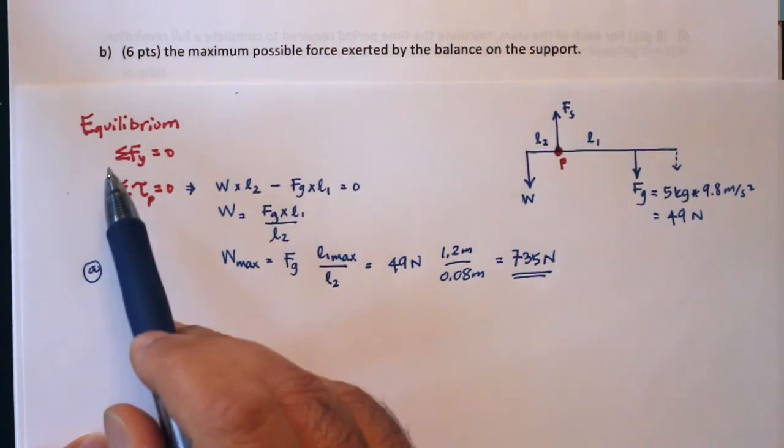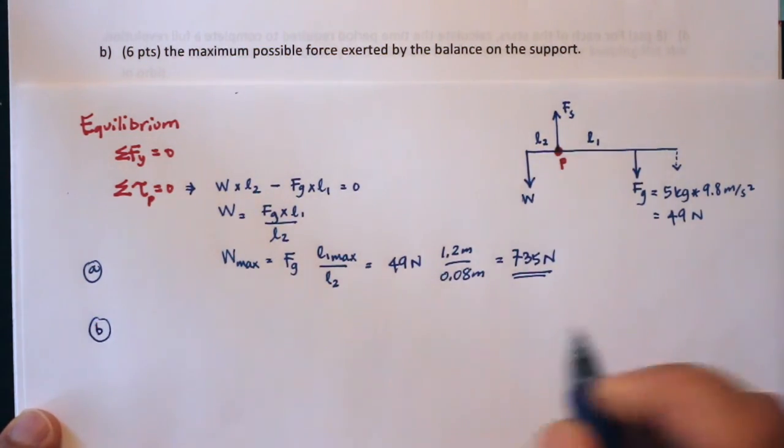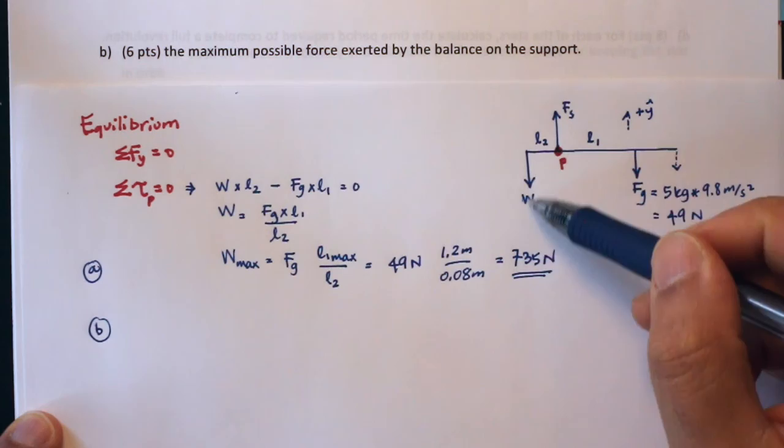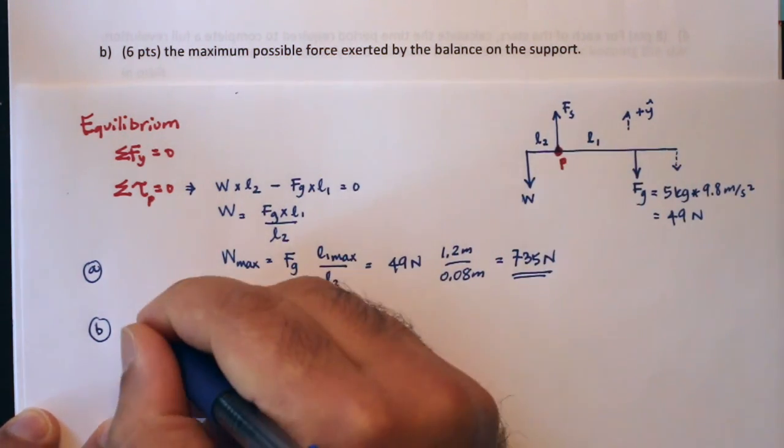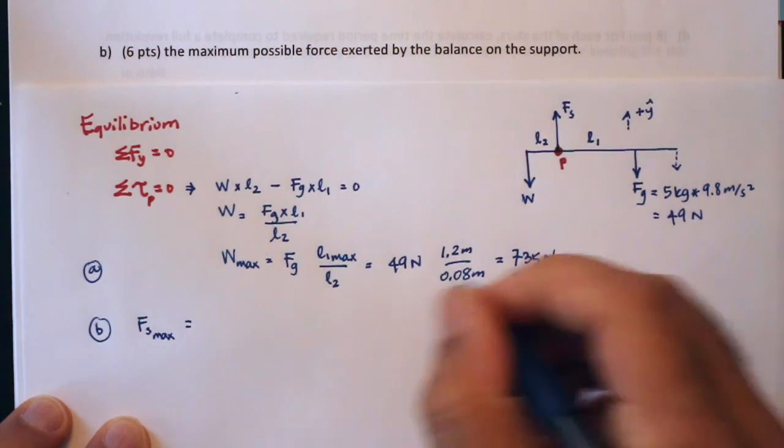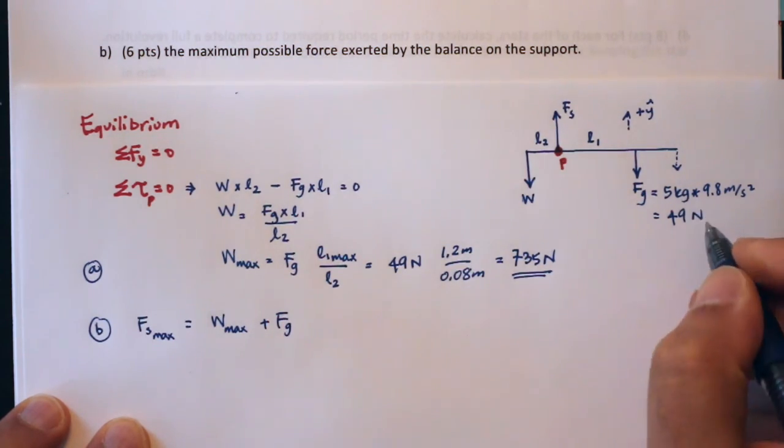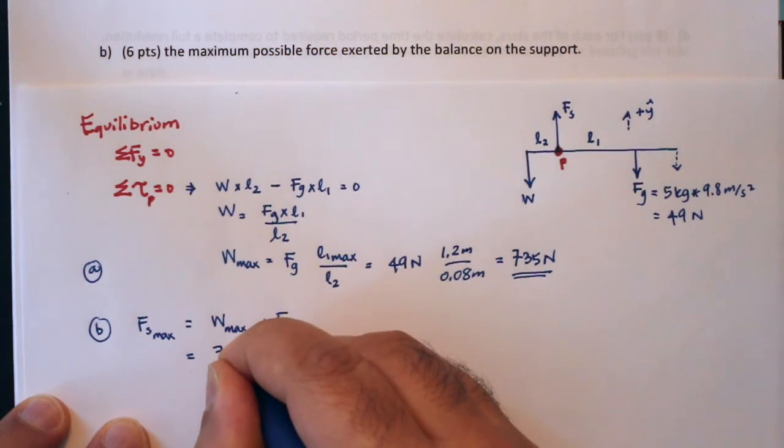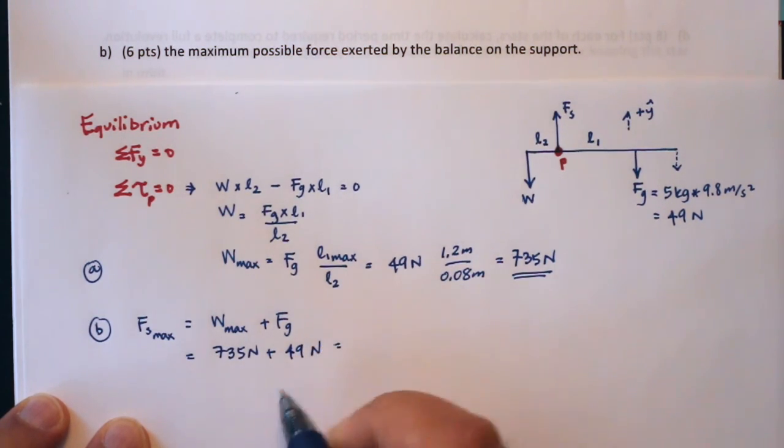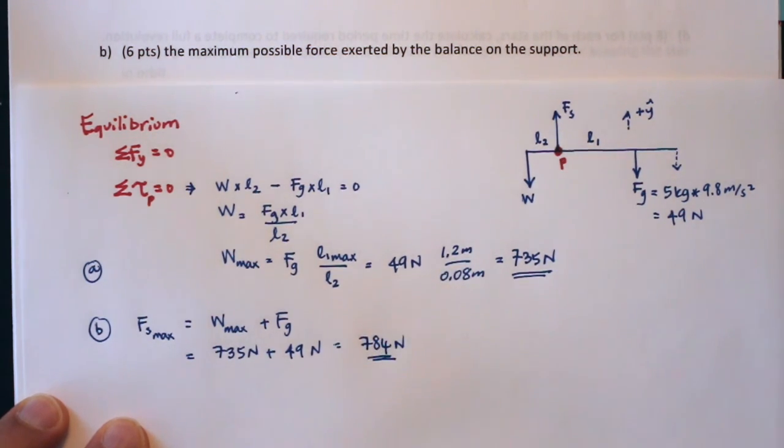And to get the maximum possible value for Fs, of course you have to hang the maximum possible weight here, and this weight is the same all the time, and you just look at the equilibrium in the y direction. The net force in the y direction has to be equal to zero, so anything in the positive y, which I'm going to pick to be up, minus everything that's in the negative y is going to be equal to zero. So then that means that the maximum force on the support is equal to the maximum weight that we've just calculated plus the force due to gravity on the balance. So that's 735 newtons plus the 49 newtons, so that's roughly 50, so that's 785 minus 1, 784 newtons, and that's the answer.